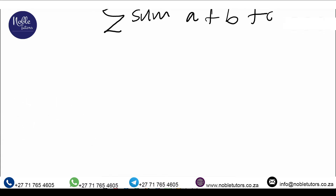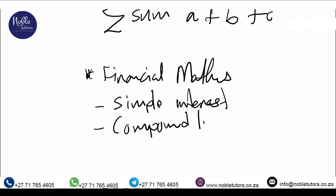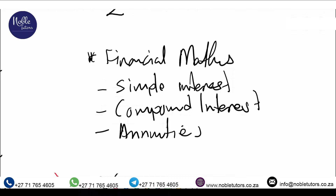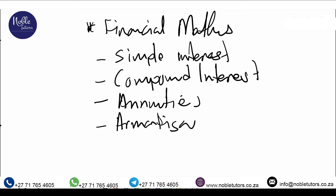Lastly but not least, we are also going to look at financial mathematics. Under financial mathematics, we are going to talk about simple interest, compound interest, annuities, and amortization. We will be talking about these in greater detail when we go through our topics, and I will cover all these sections in the next classes that follow.